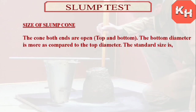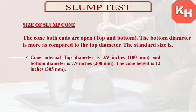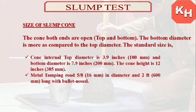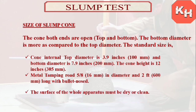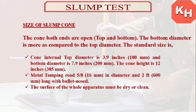Now we check the size of the slump cone. The cone is open at both ends — top and bottom. The bottom diameter is larger than the top. The standard internal top diameter is 3.9 inches (100 mm) and the bottom diameter is 7.9 inches (200 mm). The cone height is 12 inches or 305 mm. The metal tamping rod is 5/8 inch (16 mm) in diameter and 2 feet (600 mm) long with a bullet nose. The surface of the whole apparatus must be dry and clean.